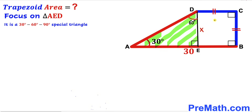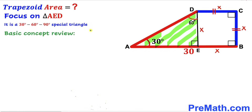Now let's focus on square EBCD. If we label its side length as x, then since a square has all equal sides, all four sides are equal to x.